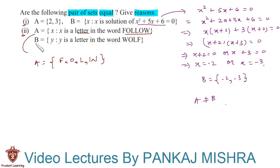Now let's take a look at set B. Set B says y is such that y is a letter in the word WALK. Again, if you wish to write the given set in roster form, then its elements are W, O, L, and F. Now you can see that both set A and B have exactly the same elements.